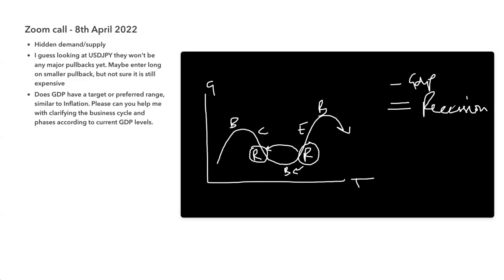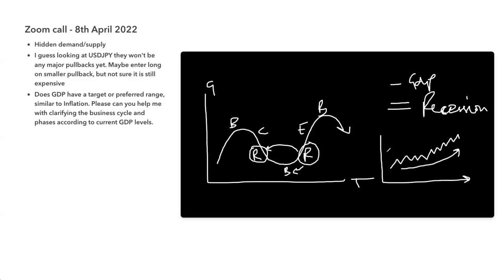So you could be recovering, and if the central bank doesn't manage the economy well — say they start hiking interest rates too aggressively — that could send the economy back into a recession. Understanding where we are in an economic cycle comes from looking at GDP data. On a chart of GDP growth you'll tend to see that during a growth phase there may be quarterly pullbacks, but overall you're on the up.